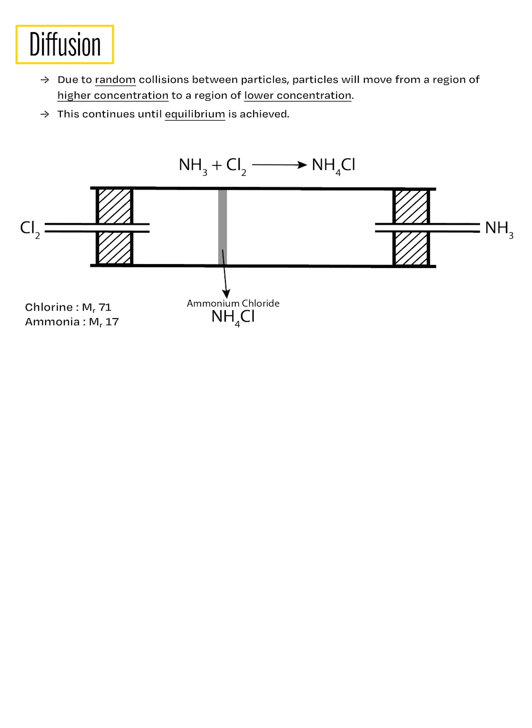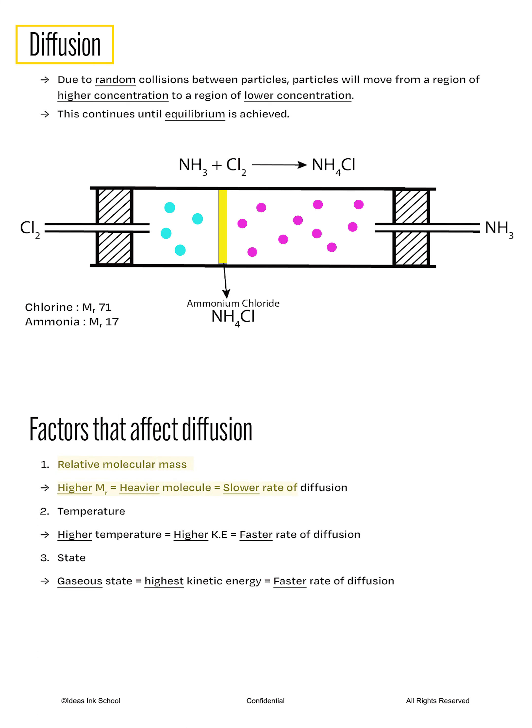Please pause the audio and refer to the diagram in the notes. In the setup, we introduce chlorine gas from the left and ammonia gas from the right side of the tube. After some time, a white ring of ammonium chloride is seen forming about a quarter of the distance away from the source of chlorine. This is because the rate of diffusion is inversely proportional to the molecular mass of the gas.